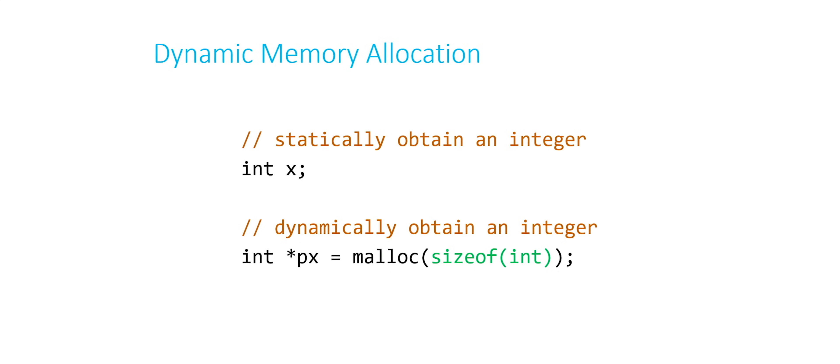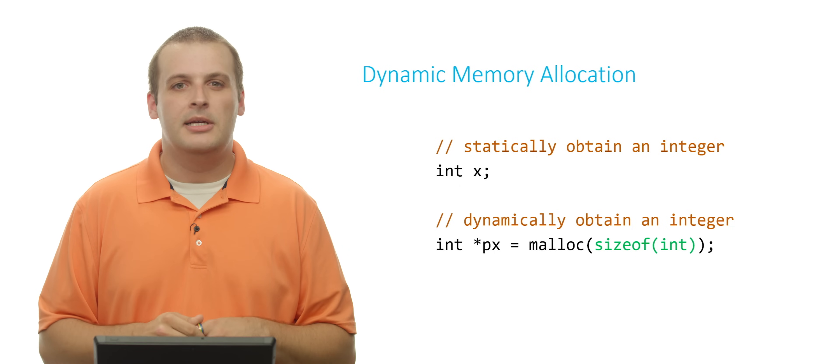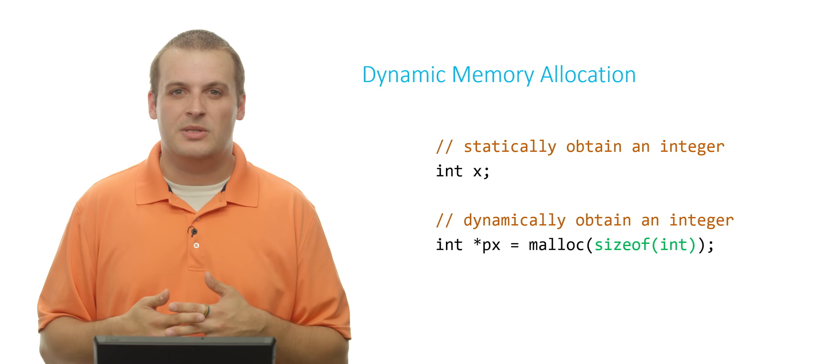So it's a little bit different. Usually with functions, you pass in a variable. With malloc, you pass in a, or with sizeof, rather, you pass in a type. And it will return how many bytes that type takes up on the system. So int star px equals malloc sizeof int, or int star px equals malloc four.